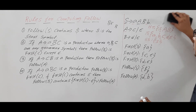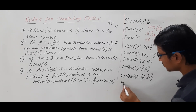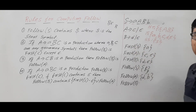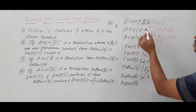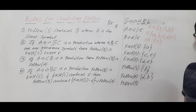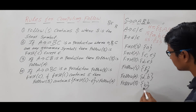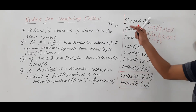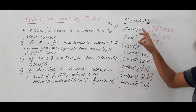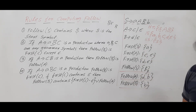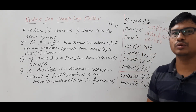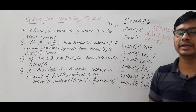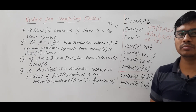Now we compute FOLLOW of B. We look at where capital B appears in the right-hand side of the productions — it is there. FOLLOW of B is FIRST of b (small b), where b is a terminal, so you will get b only. So for this grammar: FOLLOW of S is dollar, FOLLOW of A is {b, d}, and FOLLOW of B is {b}. I hope with this example you have understood how to compute the FOLLOW. I will discuss more examples in the next video. Thank you for watching, have a nice day.